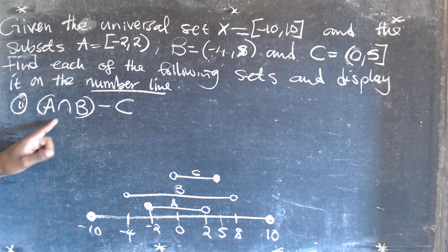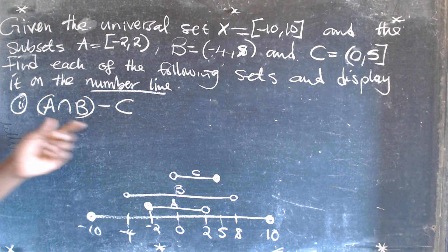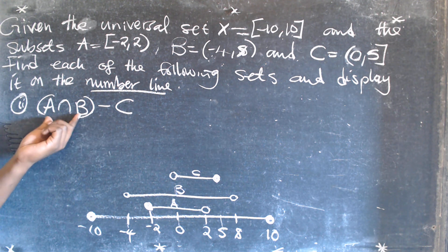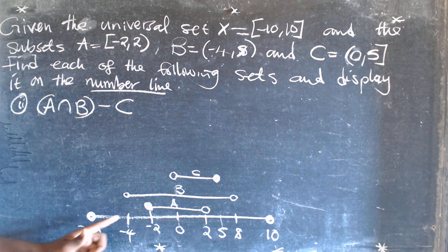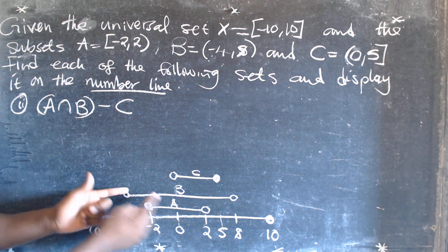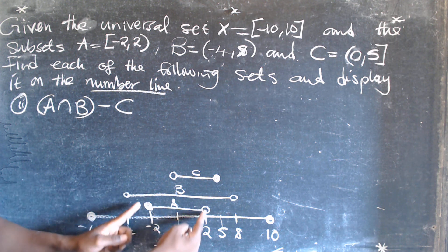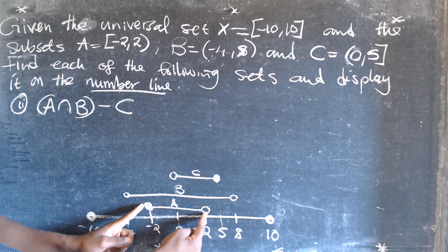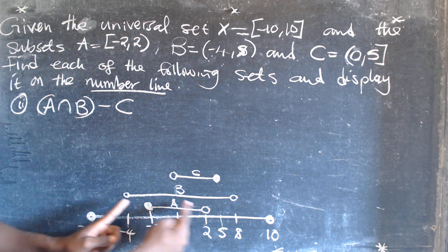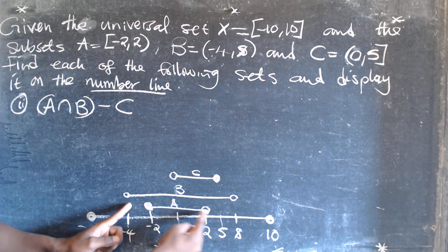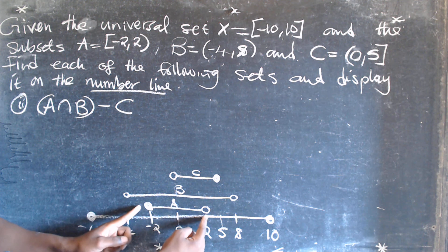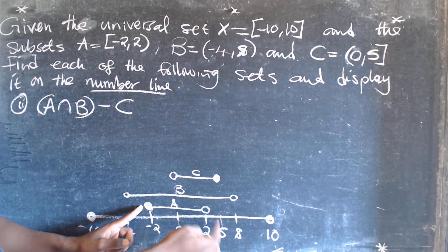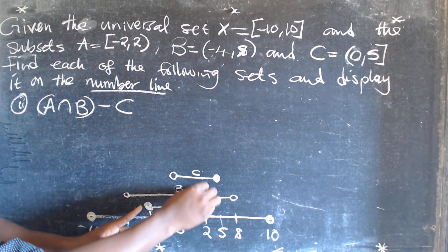We are looking for A intersection B minus C. A intersection B is the common part of B and A, which is this part here — the same region as set A. So this is A intersection B.